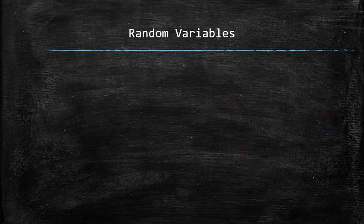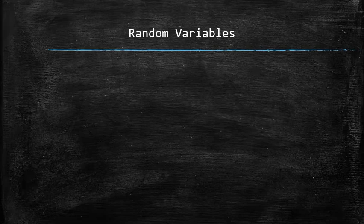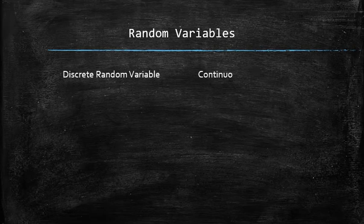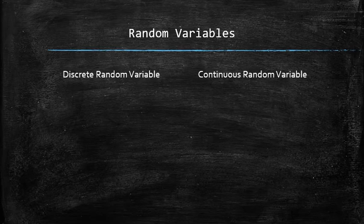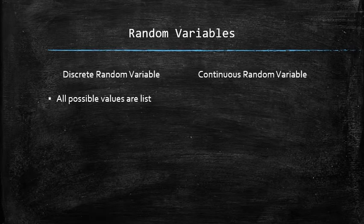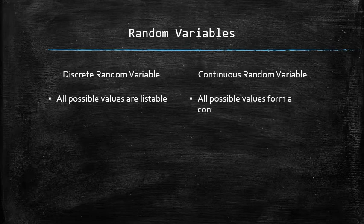Since we are dealing with quantities, there are two types of random variables: discrete and continuous. A discrete random variable is a random variable whose all possible values can be listed. A continuous random variable is a random variable whose all possible values form an interval.